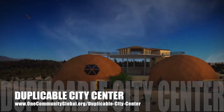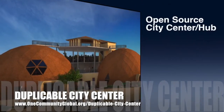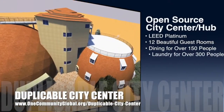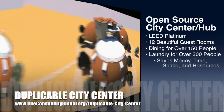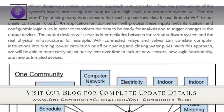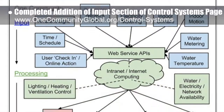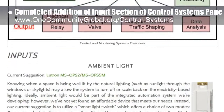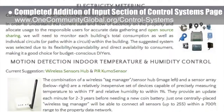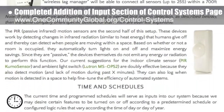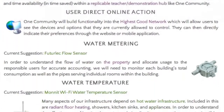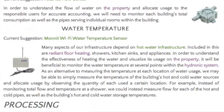OneCommunity is also creating an open source duplicable city center. It is designed to be LEED Platinum certified, provide 12 guest rooms, dining for over 150 people, and laundry and recreation space for over 300 people, all while saving money, time, space, and resources. This week, the core team completed addition of the input section of the control systems page, bringing us to about 50% completion of this page. This page will be a constantly developing resource for creating a better world through open source monitoring system setup, maintenance, evolution, and data gathering and sharing, starting with the duplicable city center and the EarthBag Village pod one and expanding as OneCommunity expands.